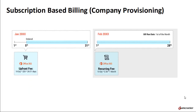In this model, the company is charged up front on the date of provisioning and then on the bill run date. The amount is based on the number of licenses provisioned for the company. A popular example of a service sold in the subscription-based model is Microsoft Office 365.